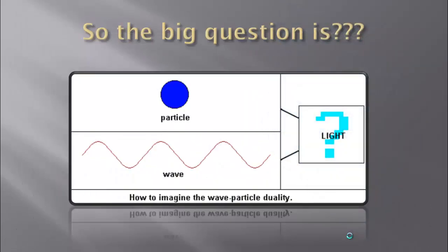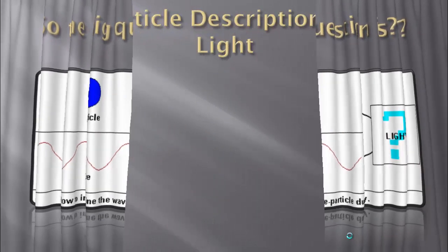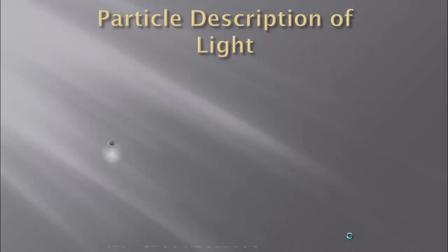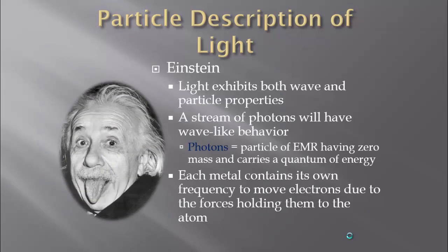So the big question is: does light behave as a particle because it can move electrons? Or does it behave more as a wave because we can measure energy, wavelength, and frequency? To answer this question we turn to Einstein. Einstein says, why choose? Why can't it be both a wave and a particle? A stream of photons will have wave-like behavior. A photon is a particle of electromagnetic radiation that has zero mass but carries a quantum of energy.